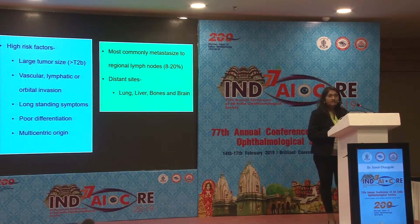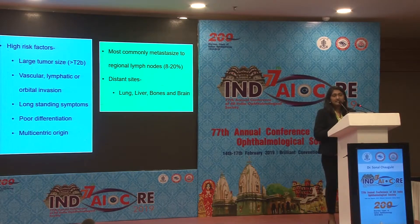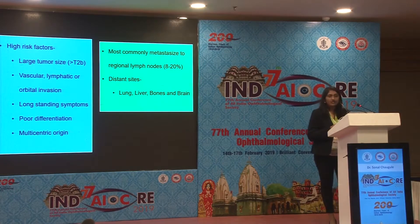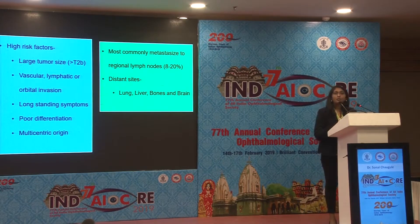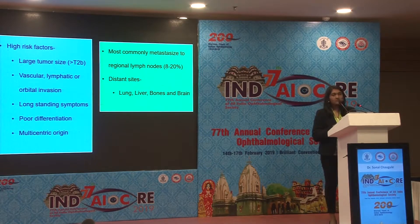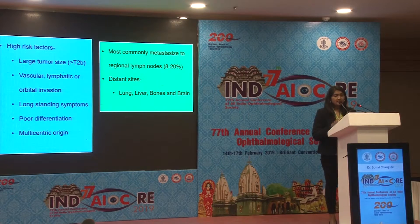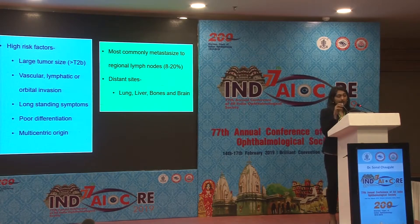The high risk factors which increase the chances of local recurrence as well as systemic metastasis include large tumor size, AJCC classification more than T2B, perivascular, lymphatic, or orbital invasion visible preoperatively via imaging or postoperatively on histopathology, presence of longstanding symptoms before diagnosis, poor differentiation on histopathology, and multicentric origin in a single eye. They generally metastasize hematogenously or through lymphatics to regional lymph nodes. The most commonly listed sites include lung, liver, bone, and brain.